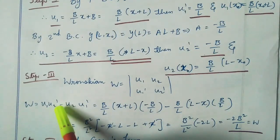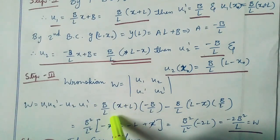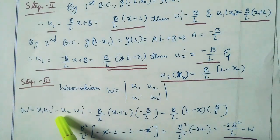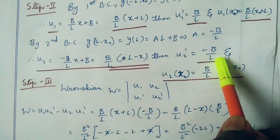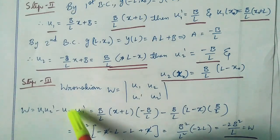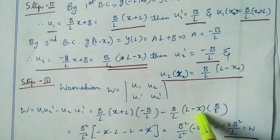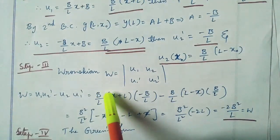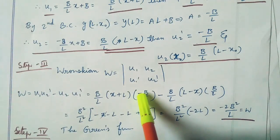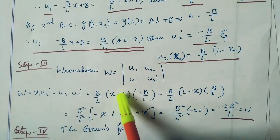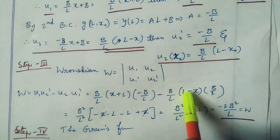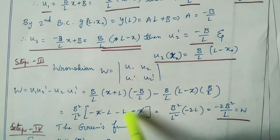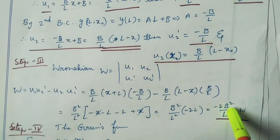Step 3: Wronskian W equal to u1·u2 dash minus u2·u1 dash equals (b/l)·(x plus l) into minus b/l, minus (b/l)·(l minus x) into b/l. This equals b²/l² common, with minus(x plus l) minus (l minus x), giving b²/l² into minus 2l, so W equal to minus 2b²/l.